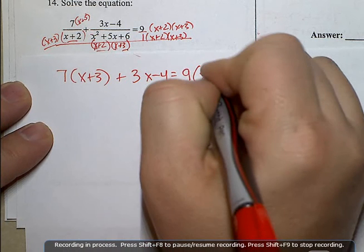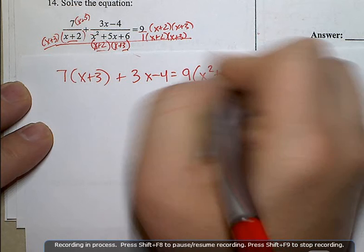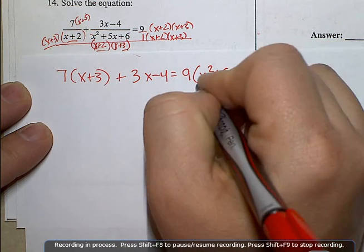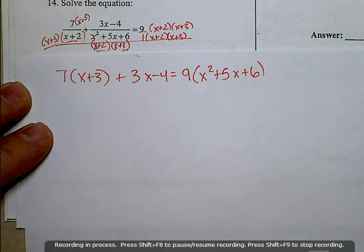Or you could take time to foil out x plus 2 and x plus 3 and combine like terms and you'd still end up with the same trinomial. I'm going to distribute.